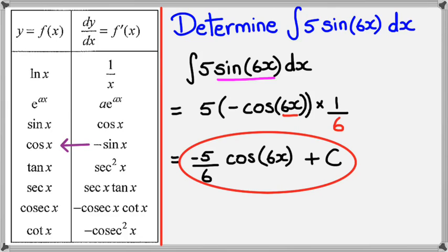What you would notice is that if you differentiate whatever's inside the red circle, you should pretty much end up with what you have here. So if you differentiate negative 5 over 6, cos 6x plus c, you should get your final answer as 5 sine 6x.